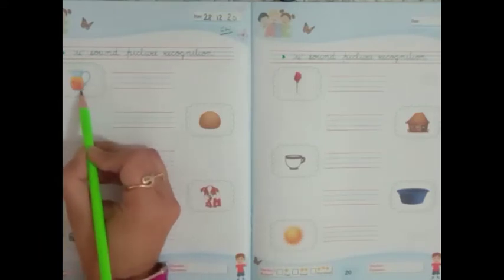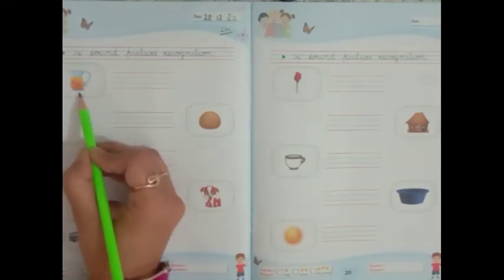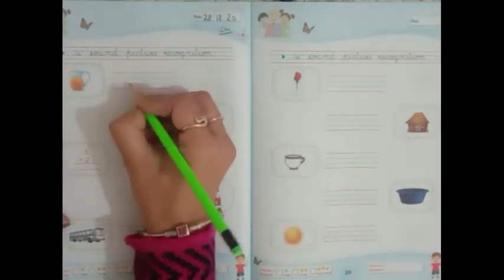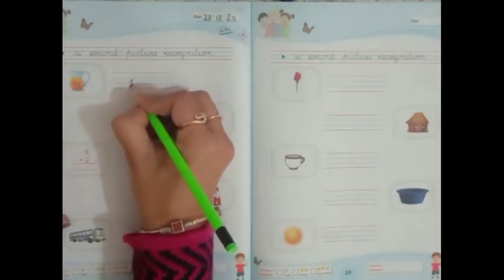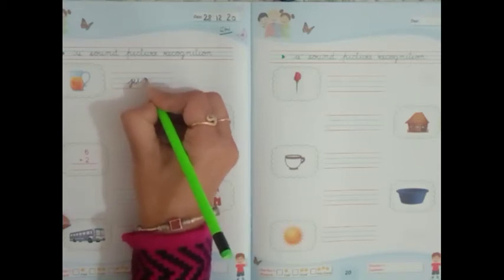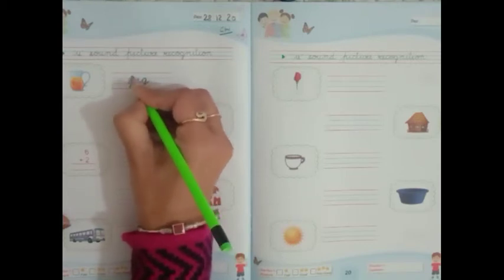So look carefully. What is this? This is a jug. So we will write J-U-G. Jug.